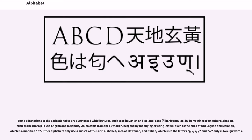Some adaptations of the Latin alphabet are augmented with ligatures, such as ash in Danish and Icelandic and in Algonquian, by borrowings from other alphabets, such as the thorn in Old English and Icelandic, which came from the Futhark runes, and by modifying existing letters, such as the eth of Old English and Icelandic, which is a modified D. Other alphabets only use a subset of the Latin alphabet, such as Hawaiian and Italian, which uses the letters J, K, X, Y and W only in foreign words.